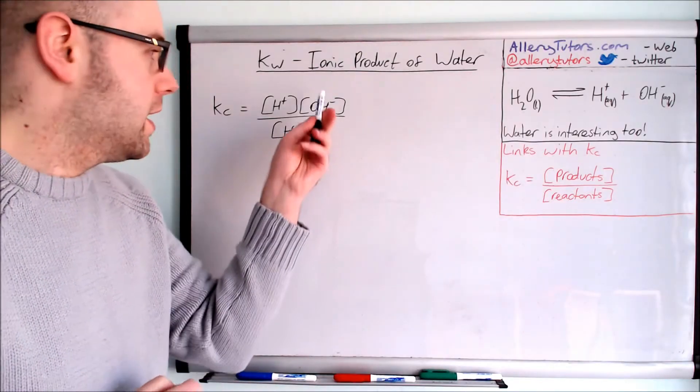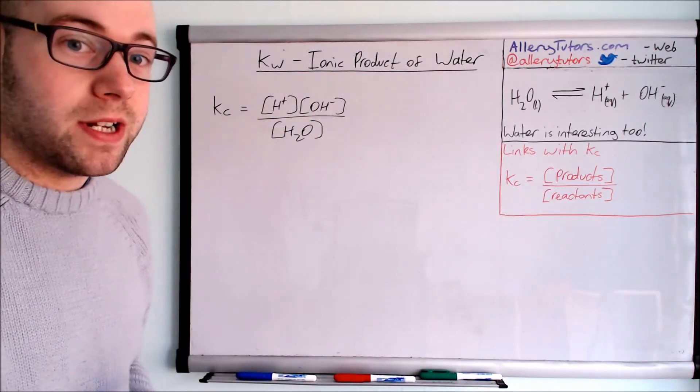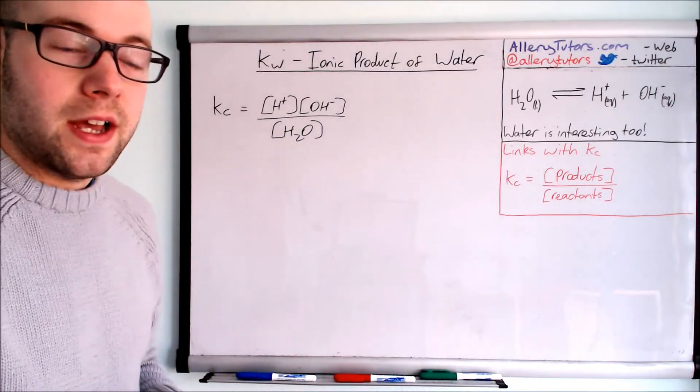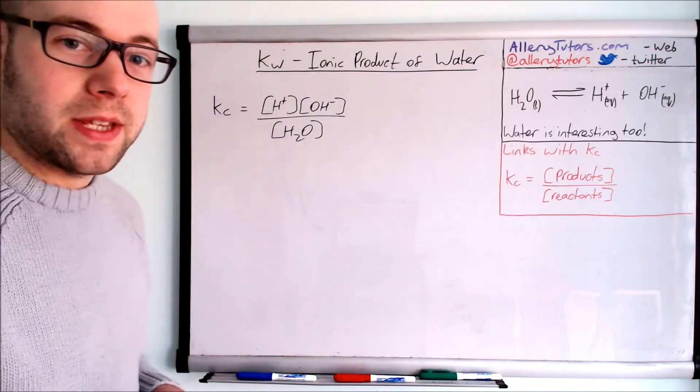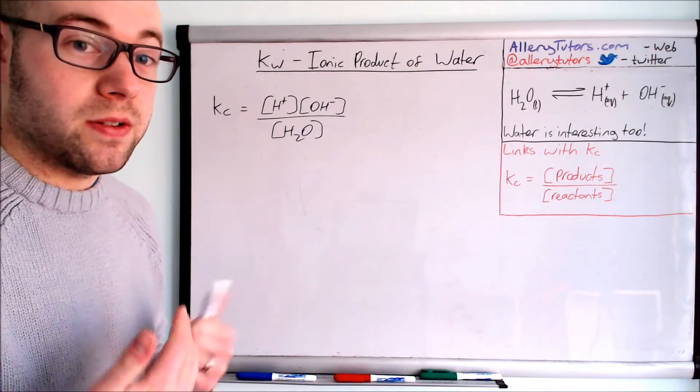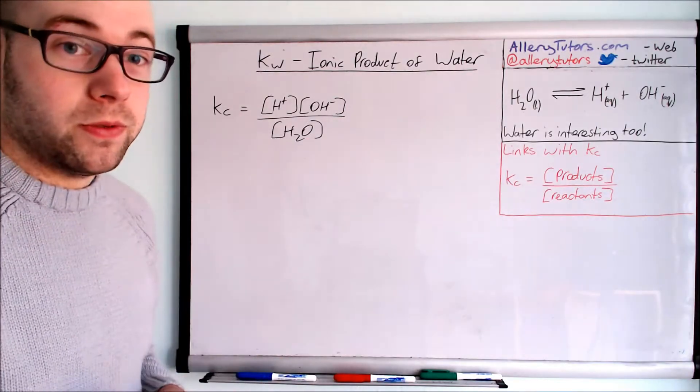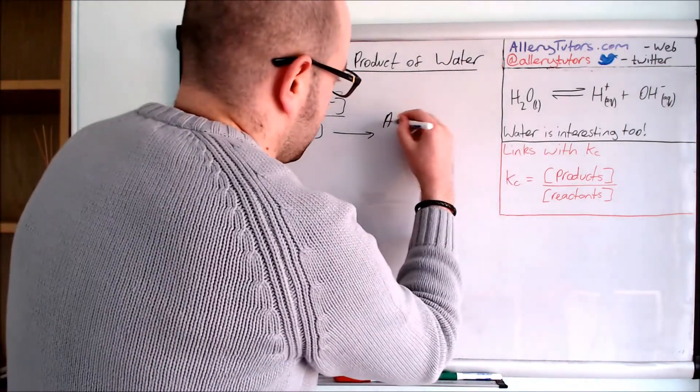Having a massive number down here and tiny numbers for these ones is going to render your Kc to be incredibly small. If we change H plus and OH minus ions very slightly, it's not really going to show much of a difference with Kc. So one of the assumptions we make when deriving the Kw expression is that the concentration of water will remain constant.